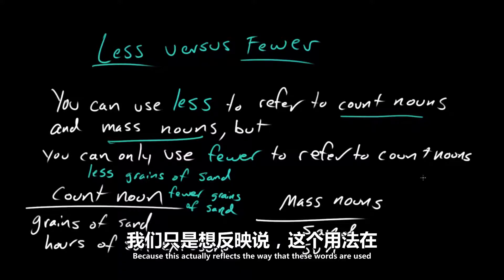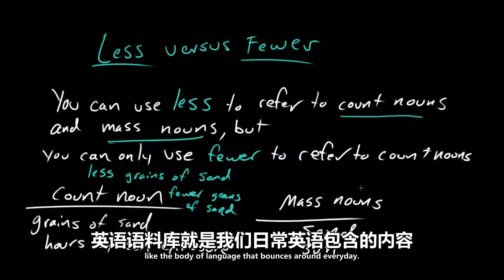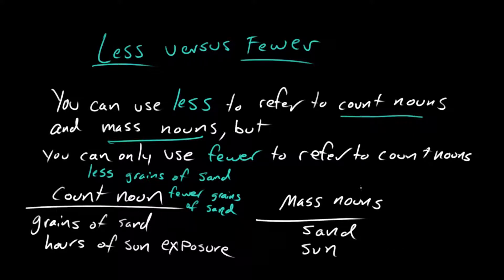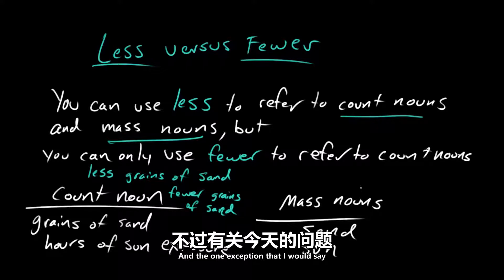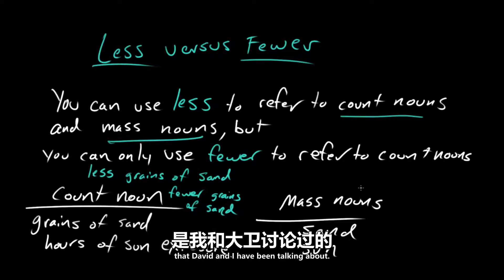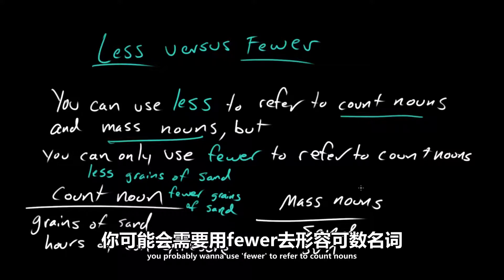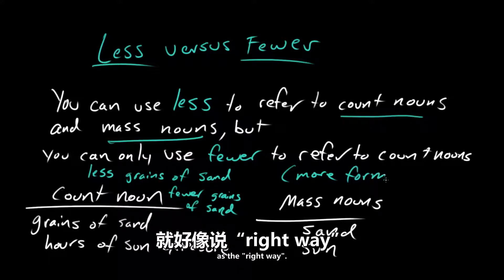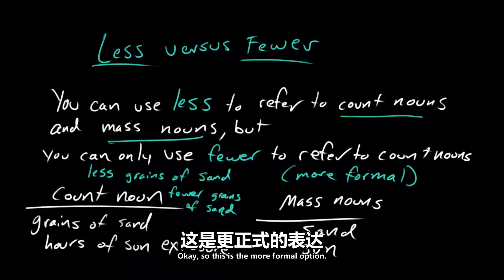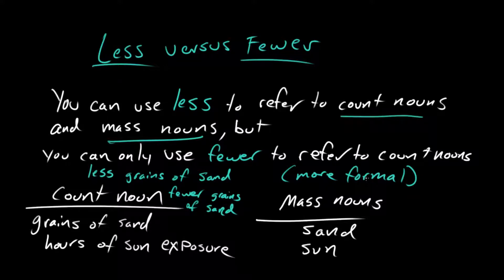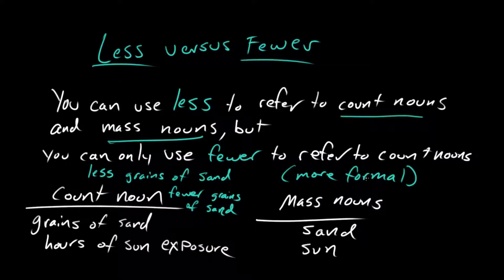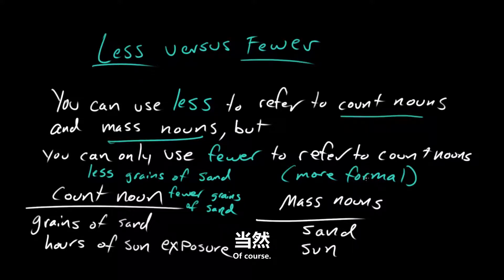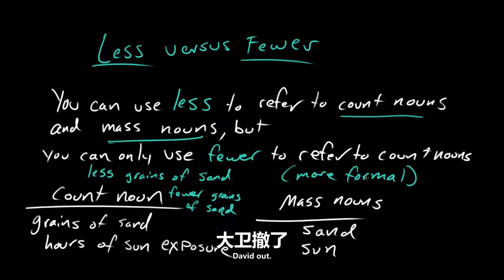So we can say less to refer to countable items. And lest you think we're replacing one dude's opinion from 1770 with two people's opinion from the present — that's a legitimate criticism — what we're trying to say is that this reflects the way language is commonly used and understood now. This isn't just the two of us making an arbitrary rule. This actually reflects the way these words are used in the corpus of English, the body of language that bounces around every day. The one exception: if you're writing a formal paper, you probably want to use fewer to refer to count nouns, because that's still what's on the books as the 'right' way. They're both correct, but fewer is more formal. Thank you, Rosie. I feel like I learned something today. Thank you for disabusing me of this superstition. You can learn anything. David out. Rosie out.